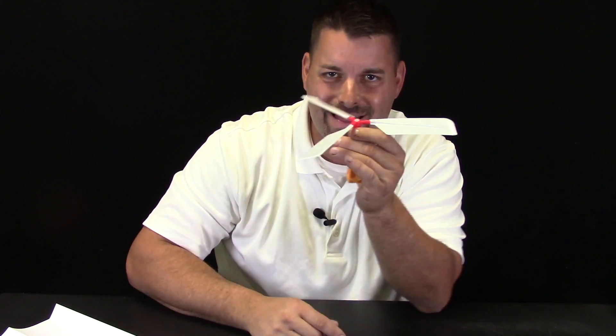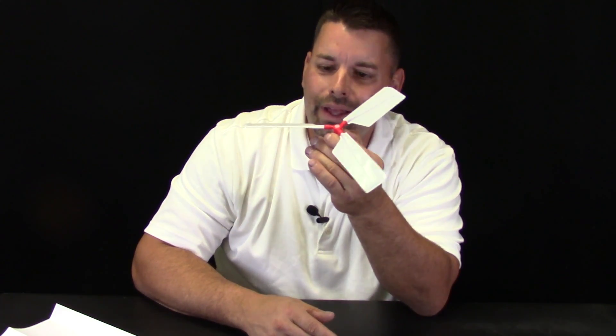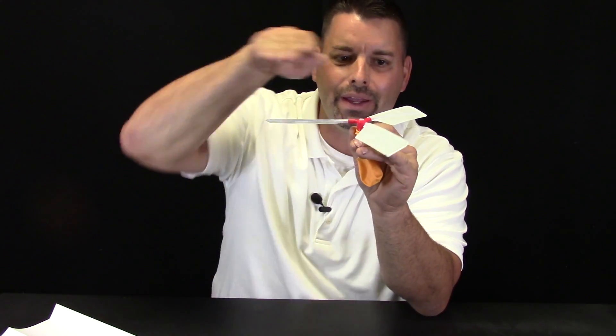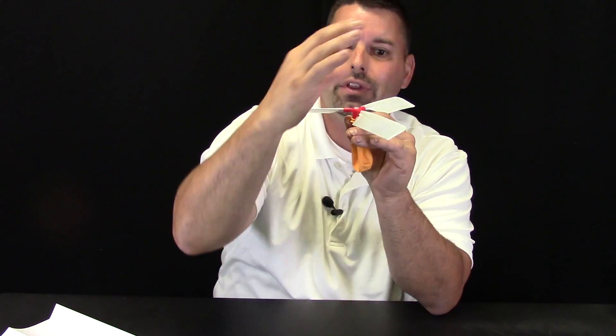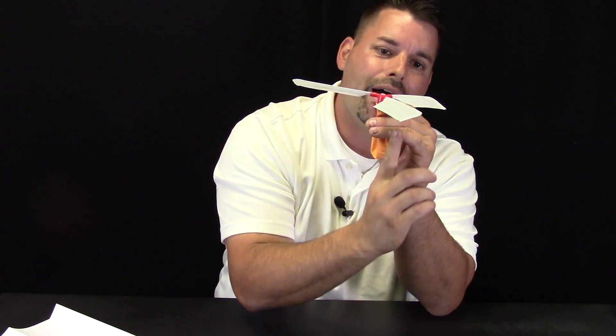So how does that fit into our balloon helicopter? Well as our wings or blades spin, air is forced over the top of the wing. Now that air is moving quicker over the top of it. So we have lower pressure up here and higher pressure underneath and that is what creates our lift.